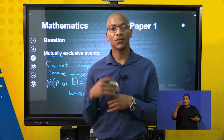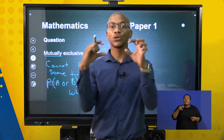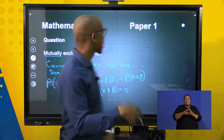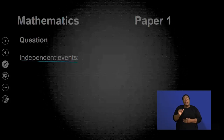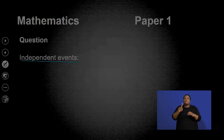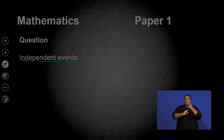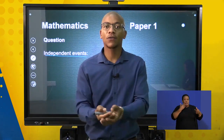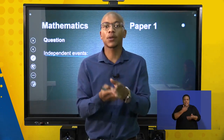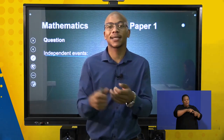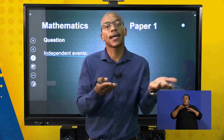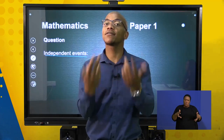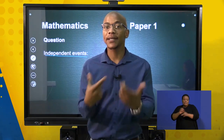For independent events, these are events that can happen at the same time. For example, if I'm flipping a coin and throwing a die, there's a possibility of getting a head and a six at the same time because those events are independent of each other. Getting a six does not affect getting a head or a tail and vice versa. The formula for independent events is: P(A and B) = P(A) × P(B).